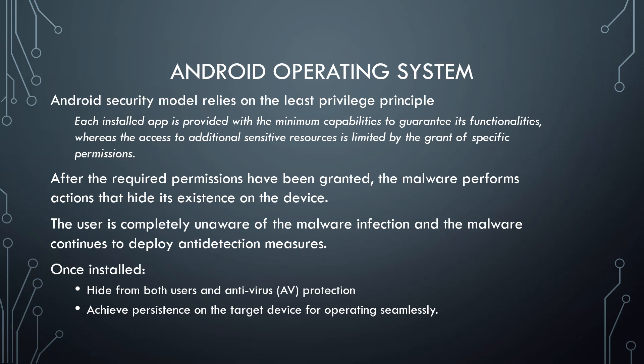After the required permissions have been granted, the malware performs actions that hide its existence on the device, and the user is completely unaware of the malware infection. The malware continues to deploy anti-detection measures. Once installed, the malware can hide from both the user and antivirus protection, and achieve persistence on the targeted device for seamless operation.